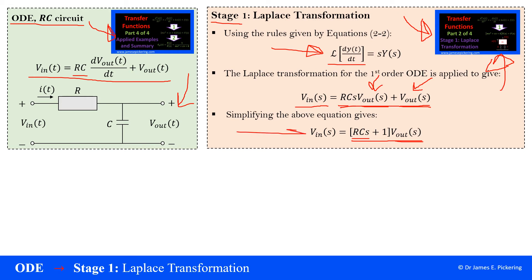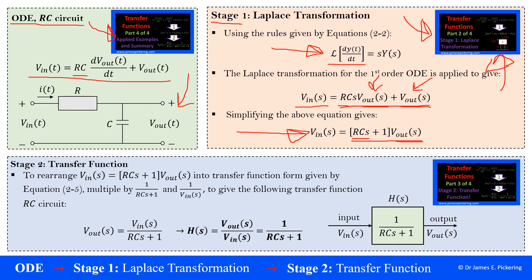What this enables us to do then is now to move on to the next stage, which is stage two, which is to rearrange this, because Laplace transformation, it enables us to use formal rules of algebra to effectively algebraically manipulate the equation to get the transfer function. So what we want to do is effectively cross multiply by initially cross multiply this equation by one over RCS plus one to this equation here. And then what we'll end up with is effectively, although I've just moved V out to the other side, we'll end up with V out over V in over RCS plus one, this equation here.